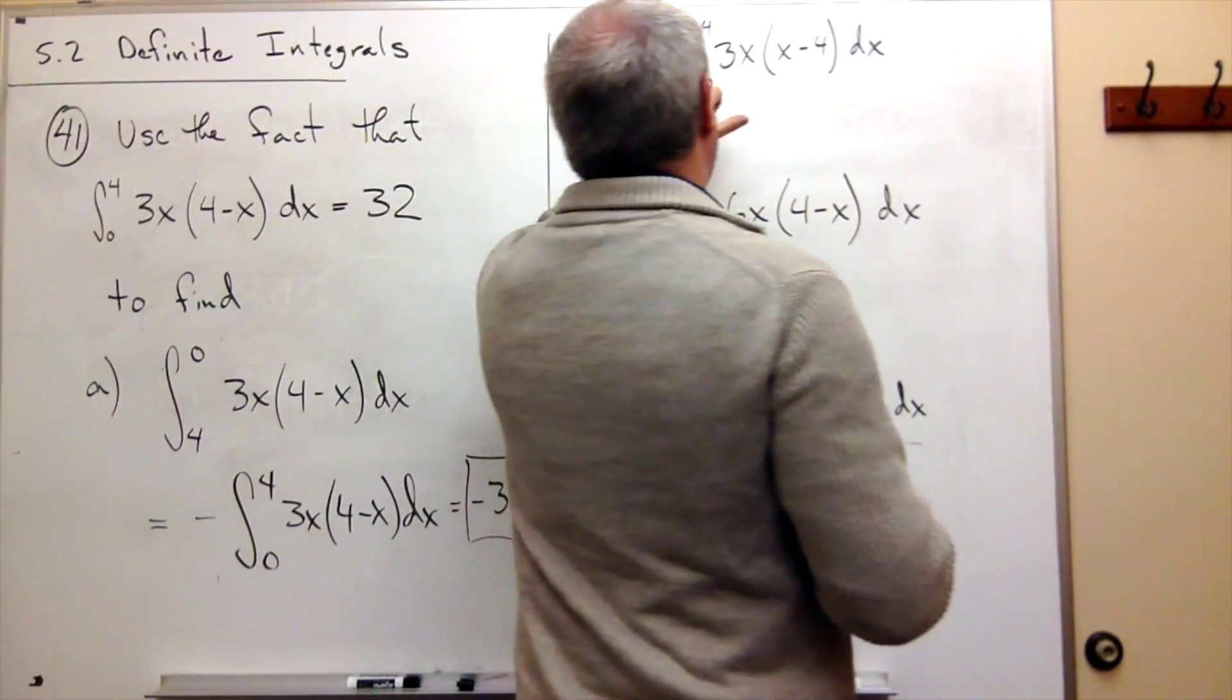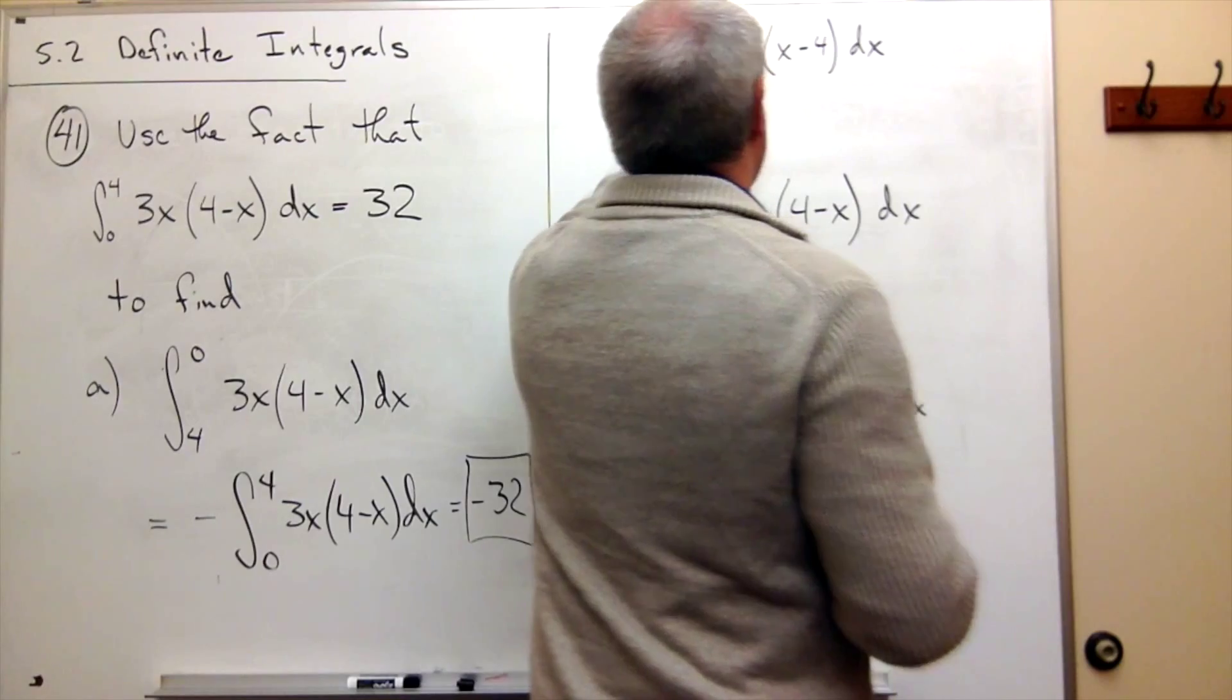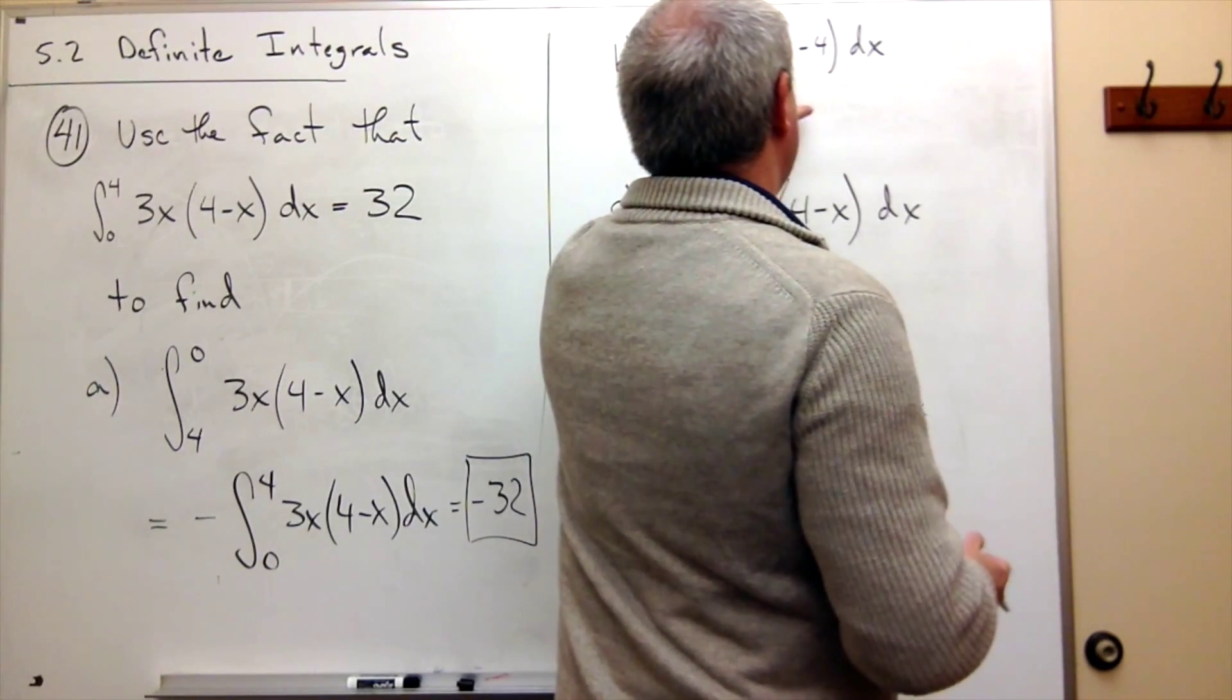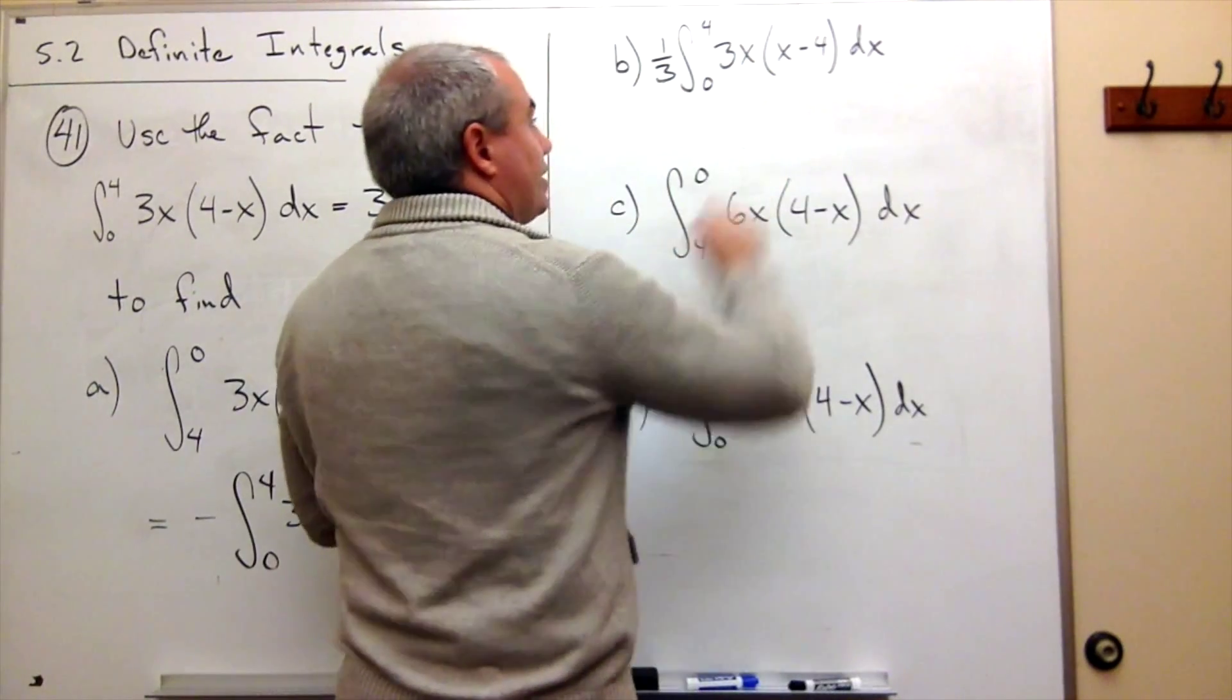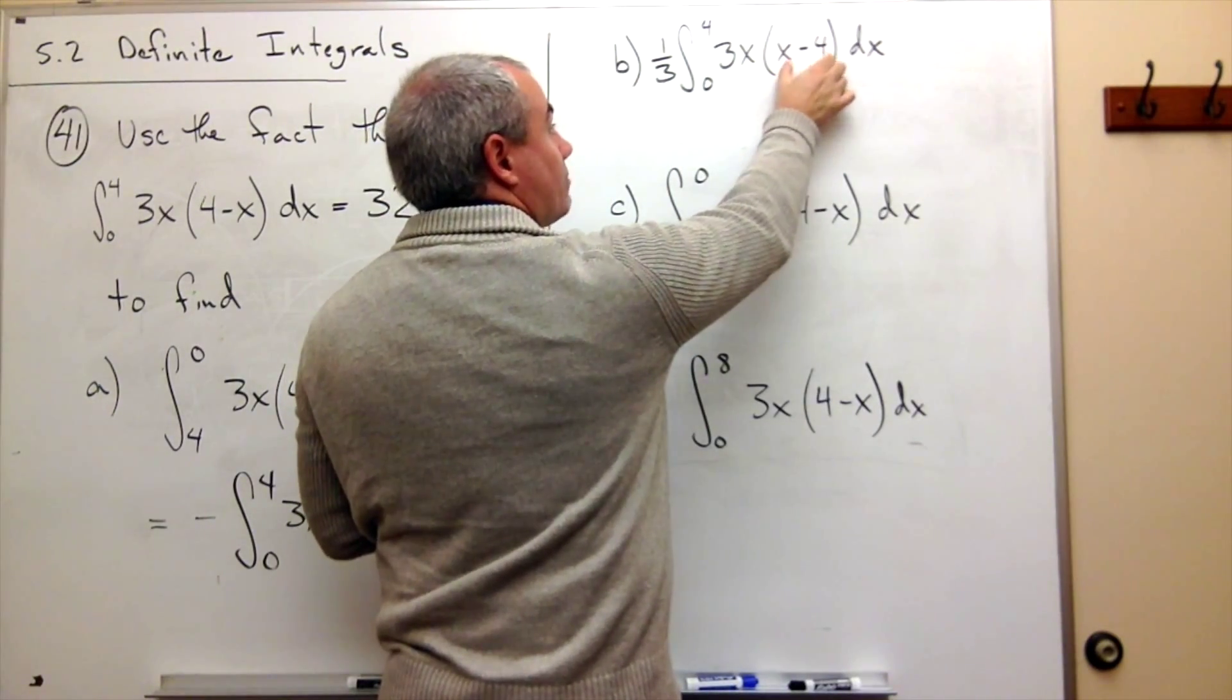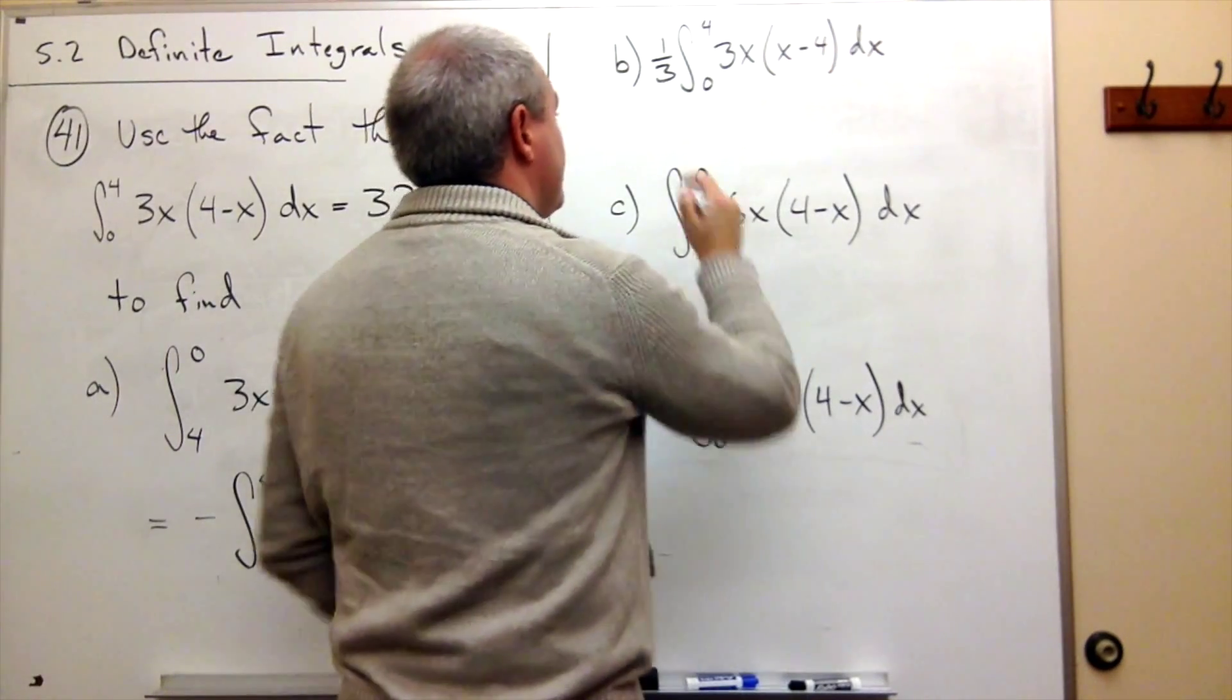Okay, so we have 1 third on the outside, 3 on the inside. Now, that's good. I've got my 3. But I still have the problem of this x minus 4. Well, if I just factor out a negative 1 from this guy, this becomes a 4 minus x. So let's do it.